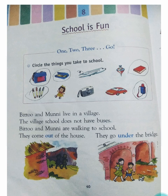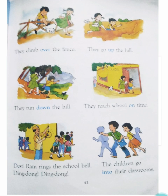They come out of the house. They go under the bridge. They climb over the fence. Fence means a bar — it means a barrier we put around a building. They climb over the fence, and then they climb up the hill.